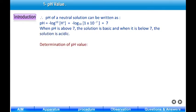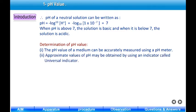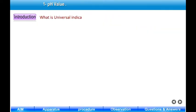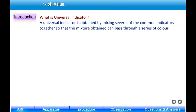The pH value of a medium can be accurately measured using a pH meter. Approximate values of pH may be obtained by using an indicator called a universal indicator. A universal indicator is obtained by mixing several common indicators together so that the mixture can pass through a series of color changes over a much wider pH range.